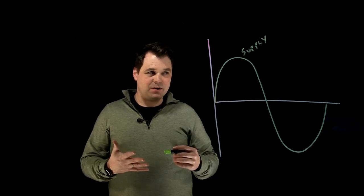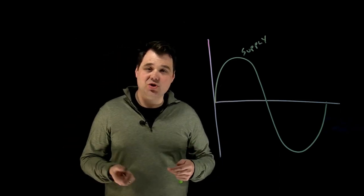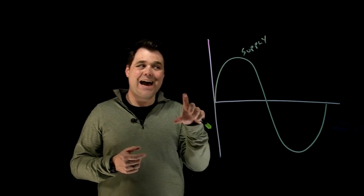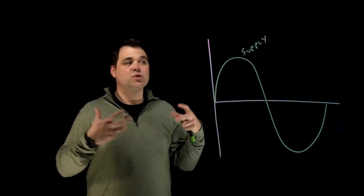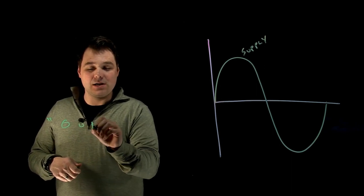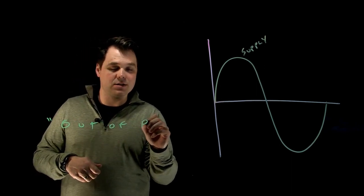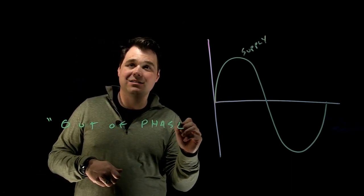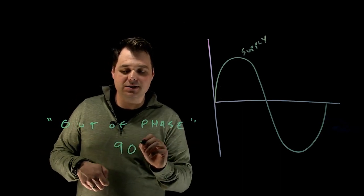Now, how do we fix that? Well, the shading coil, as you saw, was actually installed at a 90 degree angle. So it's out of phase with the supply flux, out of phase by 90 degrees. 90 degrees is the key there.